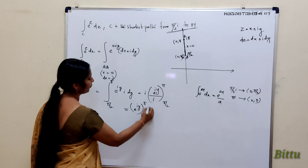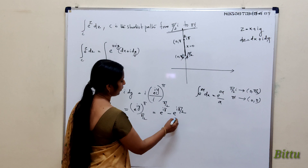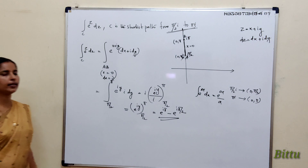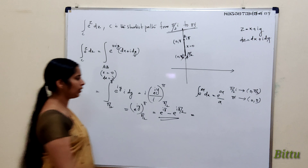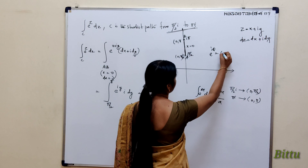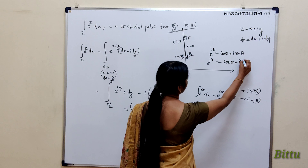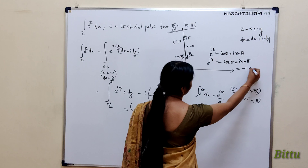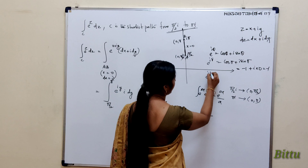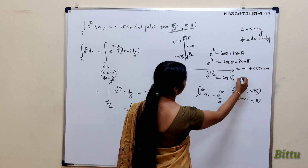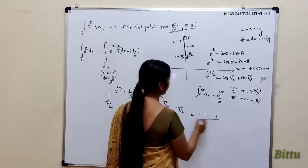The integral of e^(iy) is e^(iy)/i, evaluated from π/2 to π, giving e^(iπ) − e^(iπ/2). Using Euler's formula e^(iθ) = cosθ + i sinθ: e^(iπ) = cos π + i sin π = −1 + 0 = −1; e^(iπ/2) = cos(π/2) + i sin(π/2) = 0 + i = i. So the answer is −1 − i.